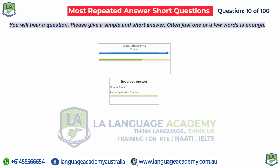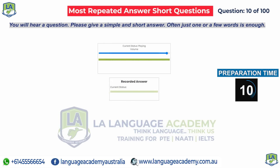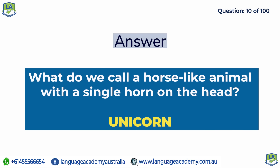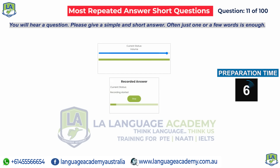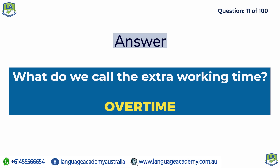What do we call a horse-like animal with a single horn on the head? Unicorn. What do we call the extra working time? Overtime.